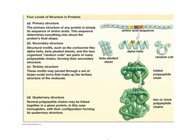We see from this diagram four levels of structure in proteins. All proteins have the first three, and very complex proteins have this fourth level as well. What are these levels called? Primary, secondary, tertiary, and quaternary. Those are the terms you'll need to know when you have the four-module test.